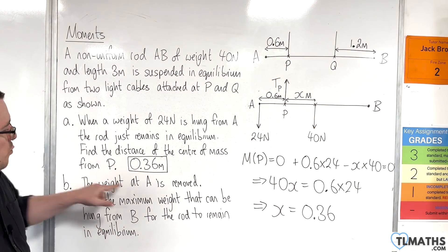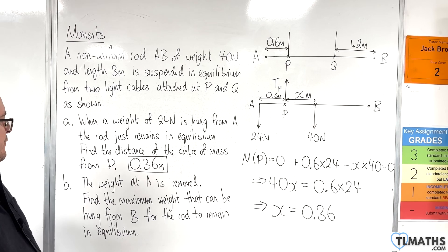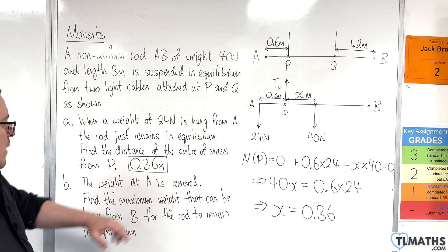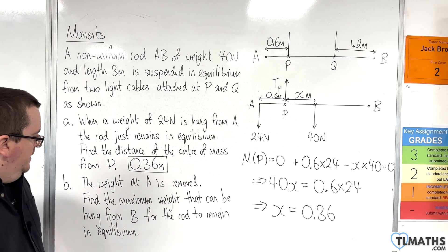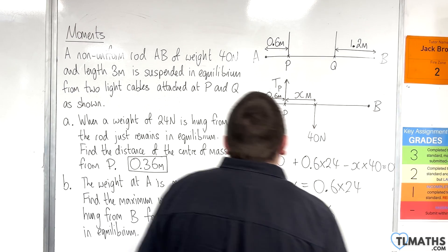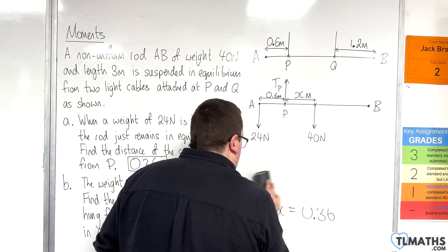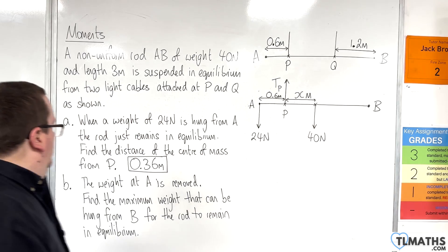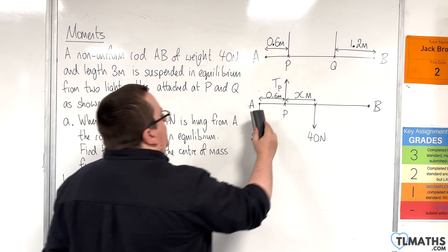Now for the second part, the weight at A is removed. Find the maximum weight that could be hung from B for the rod to remain in equilibrium. So let's edit our diagram. Let's get rid of the maths bit first. So the weight at A is removed. So that's gone.